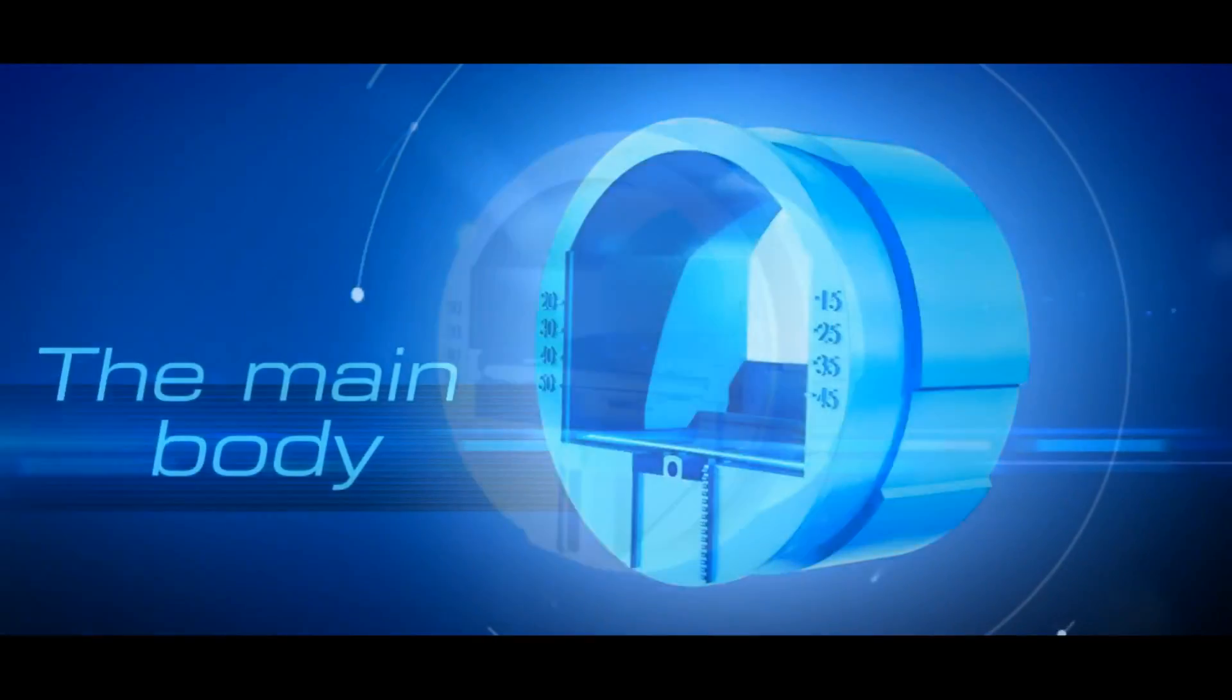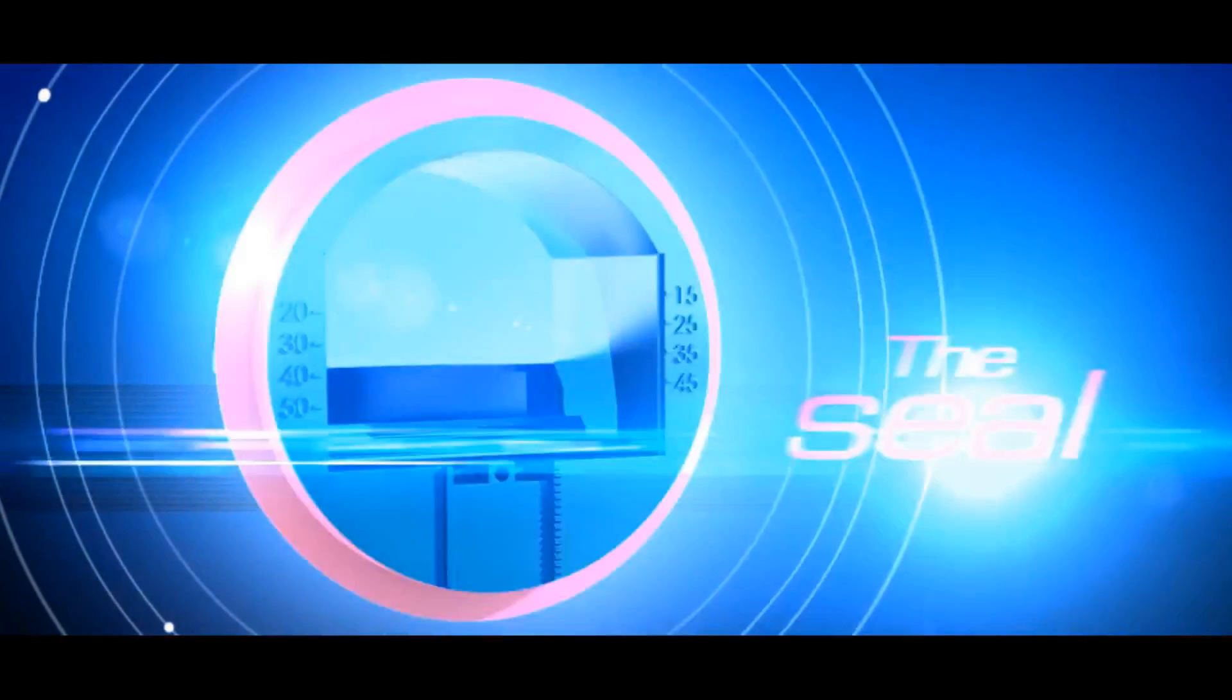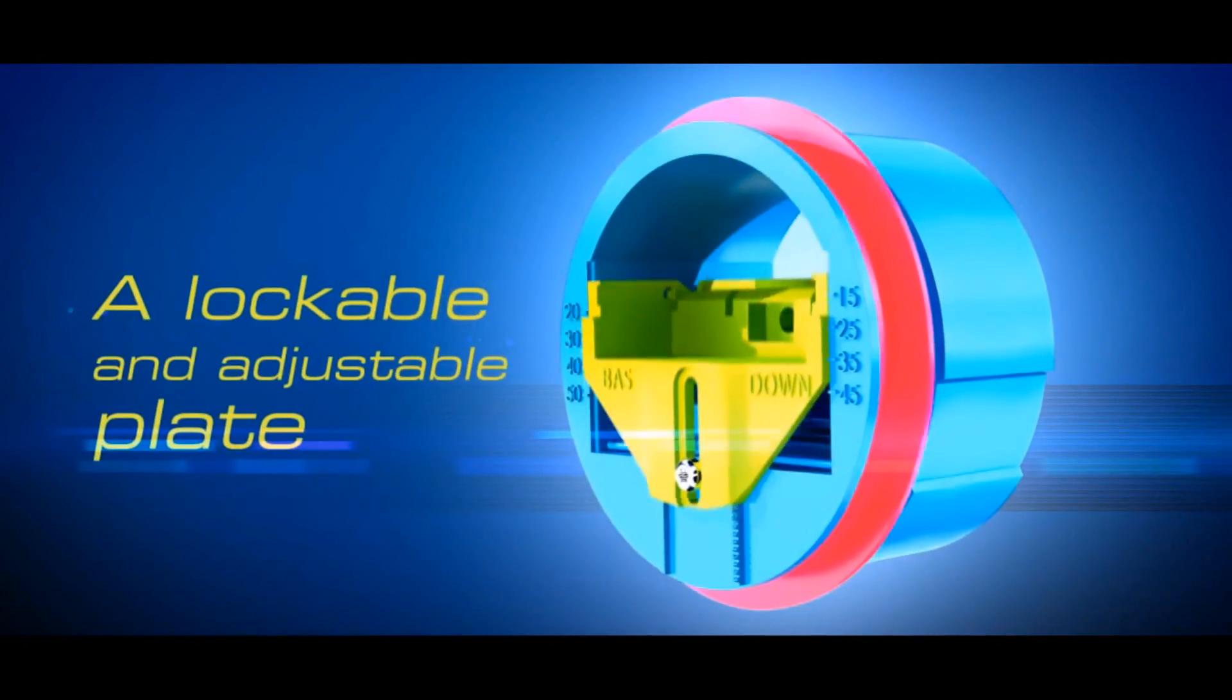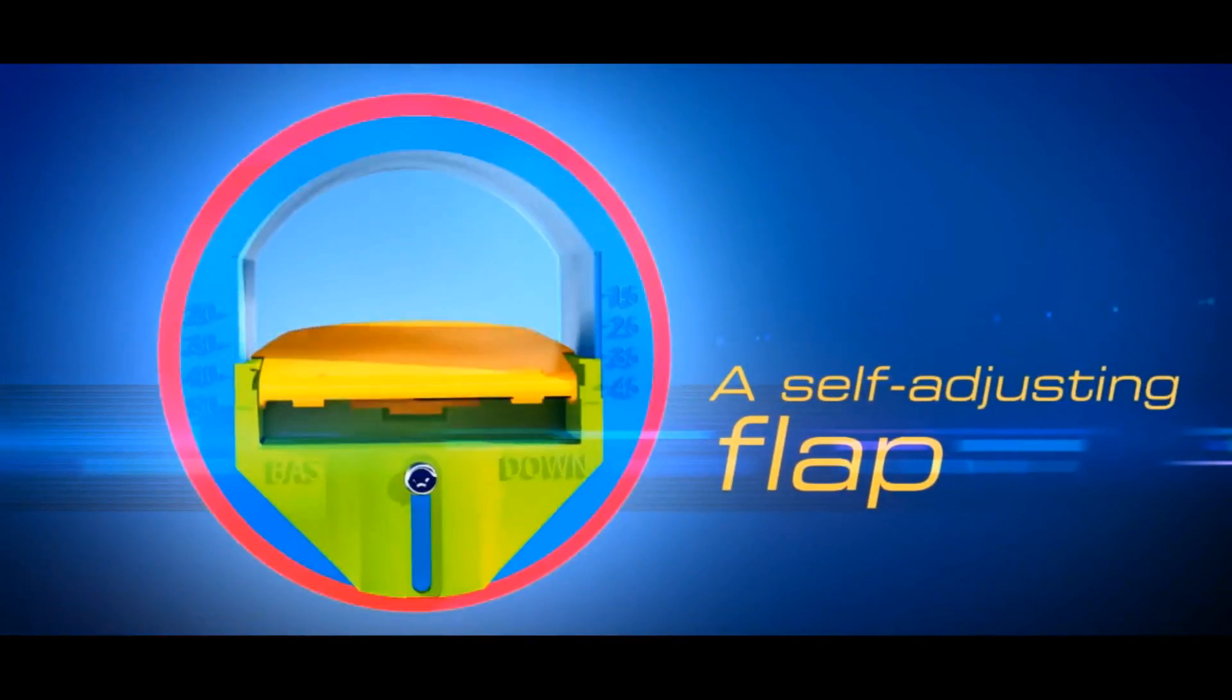The main body with connection sleeve, a seal that also holds the RDI unit in the duct, a lockable and adjustable plate used to set the air flow required and a self-adjusting flap.